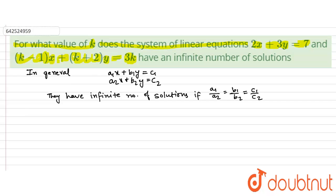Now if you just put the values here, we would get 2 by (k minus 1) must be equal to 3 by (k plus 2), and that must be again equal to 7 upon 3k.